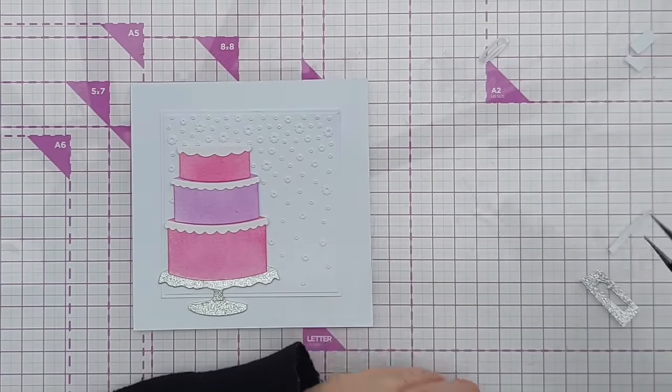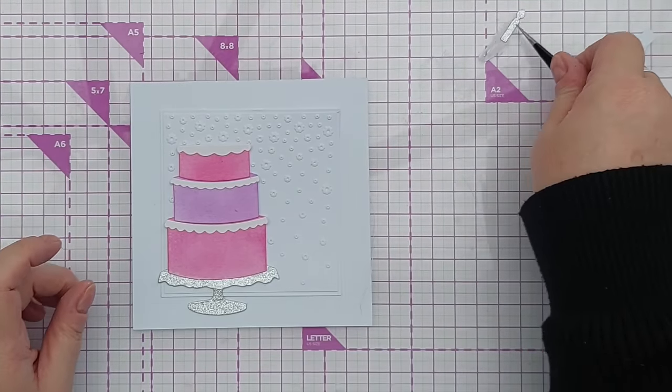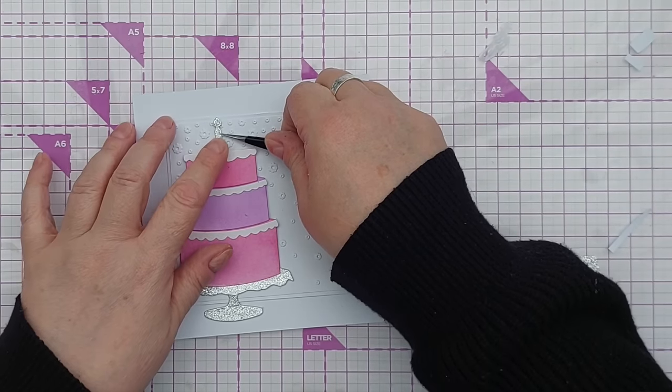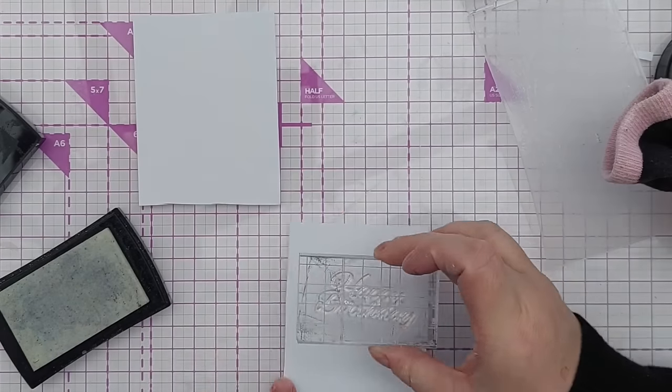Once I'd added my cake to my card I took my little silver glitter candle, added some glue to that and then popped it in the middle of the top layer of the cake, and obviously you can add as many candles as you like to the top of the cake.